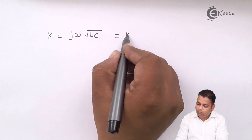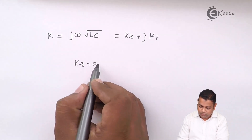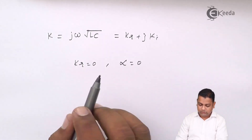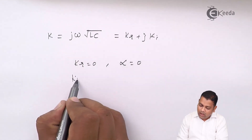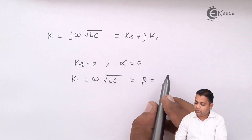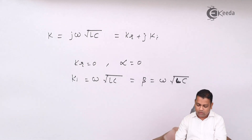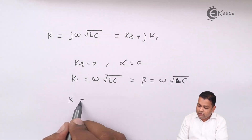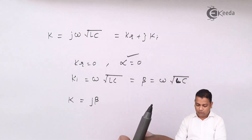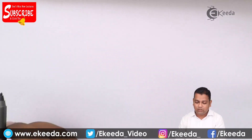In the form K_R + j·K_I, we can see that for the lossless line K_R equals zero. In general, alpha represents the attenuation constant, so here attenuation alpha is equal to zero. The imaginary part K_I takes the value ω√(LC), which represents beta — the phase constant, being the product of self-inductance per unit length and capacitance per unit length. Therefore the propagation constant K is simply j·β, where attenuation alpha equals zero.